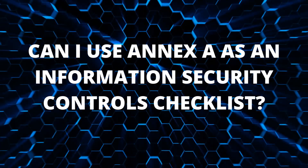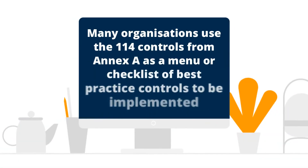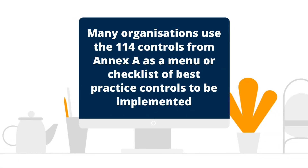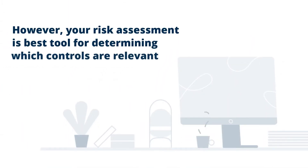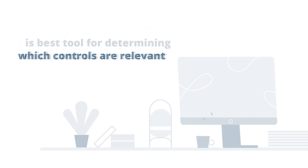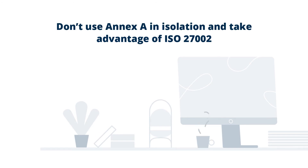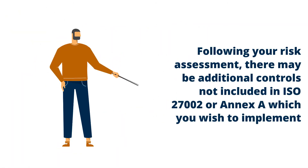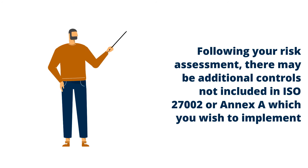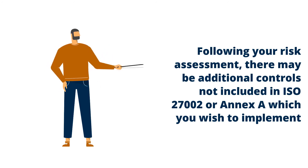Can I use Annex A as an information security controls checklist? Many organisations use the 114 controls listed in Annex A as a menu or checklist of best practice controls to be implemented. However, URM recommends that your risk assessment is used to determine which controls are relevant, as some of them may not be applicable to your organisation. We would also recommend that you don't use Annex A in isolation, as ISO 27002 provides very good additional guidance on how controls should be implemented. Following your risk assessment, there may be additional controls not included in ISO 27002 or Annex A which you wish to implement to address high risk areas.